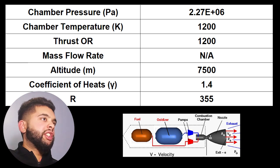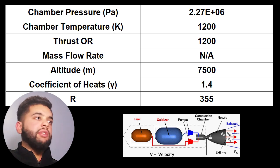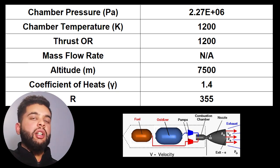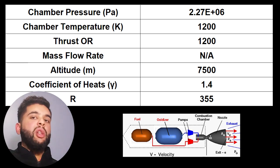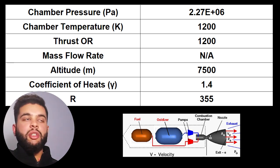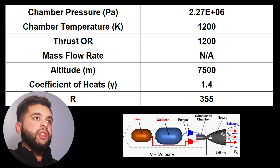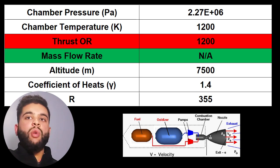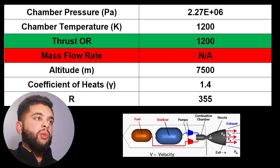Looking at the first two values, it is the pressure and temperature inside your nozzle chamber. For example, the space shuttle uses boosters which contain LOX and LH2 fuel at a specified temperature. The force is what your engine will produce to move the rocket forward, or you can also use the mass flow rate — so choose either one.